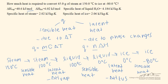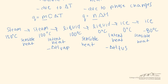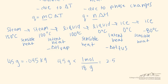Now I'll make sure I have the correct units. I need to convert 45 grams of steam into kilograms and moles. So 45 grams equals 0.045 kilograms. Converting to moles using the factor of 18 grams per mole gives us 2.5 moles of H₂O.